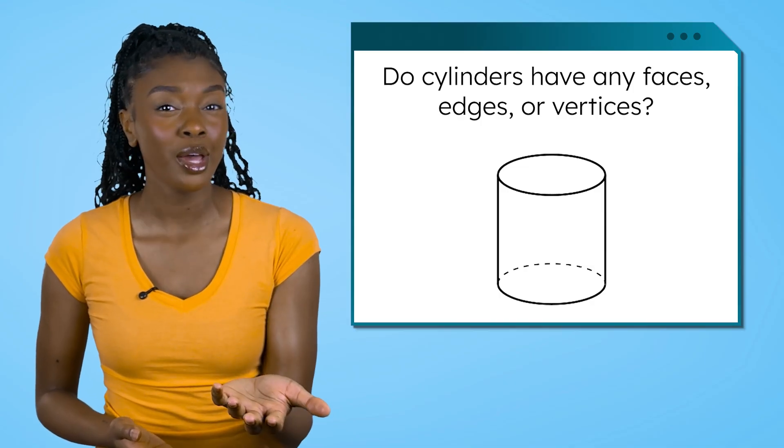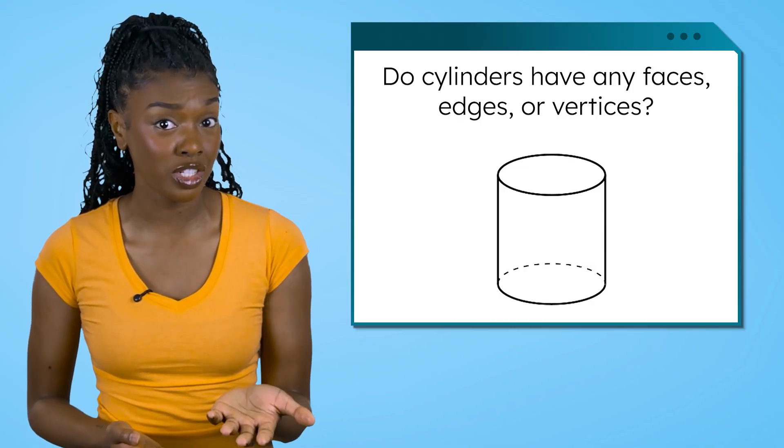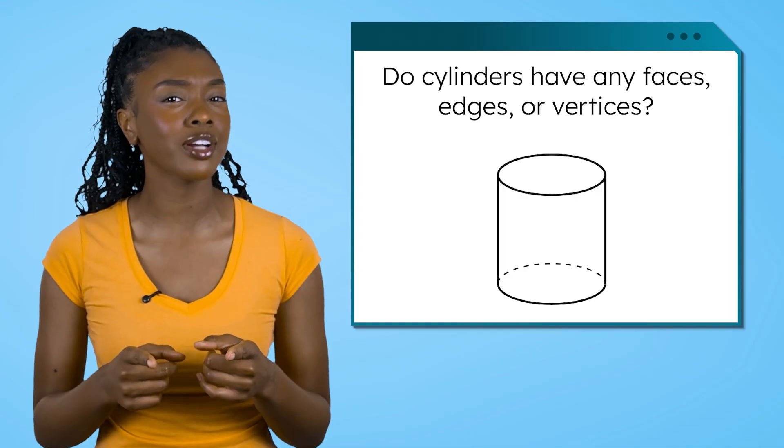What about shapes that have 2D sides that are round like a circle? Cylinders have circles as a part of the shape, but do they have any faces, edges, or vertices?